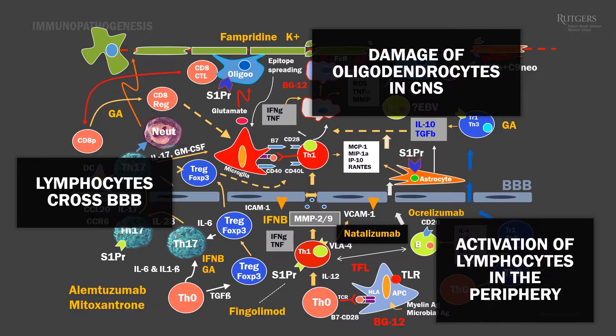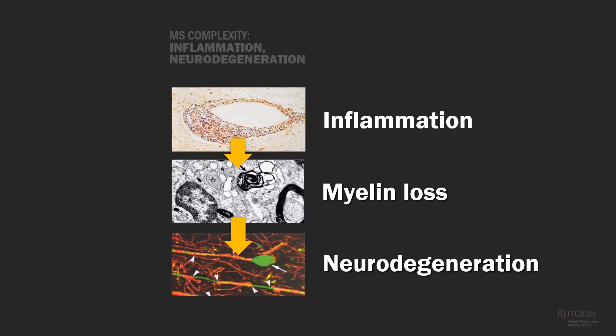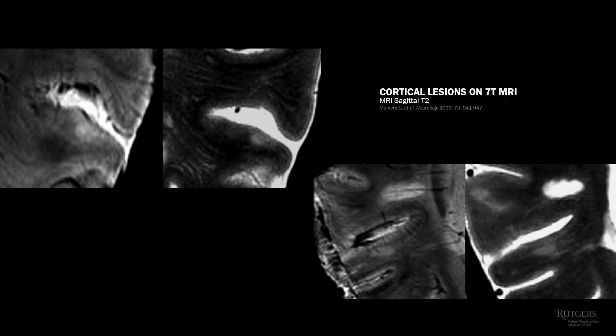We don't know exactly what is the beginning of MS. Most scientists suggest it starts with inflammation; another group suggests neurodegeneration comes first. These two processes are linked and both involved in MS pathogenesis. Most neurologists use 1.5 or 3-Tesla MRI, so most lesions we see are white matter lesions. But with 7-Tesla MRI, sensitivity increases and it appears that 90% of patients have cortical lesions in gray matter — regular MRI is not sensitive enough to pick those up. MS is both a white and gray matter disease.